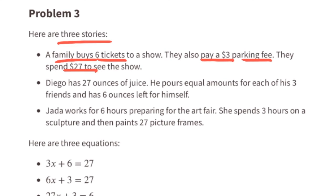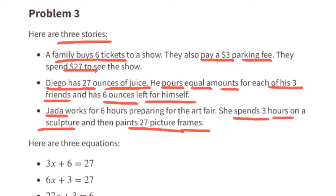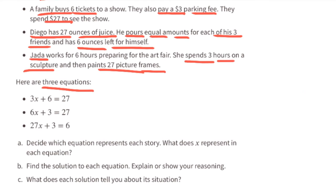Problem number 3: here are three stories. A family buys six tickets to a show, pays a three-dollar parking fee, and spends twenty-seven dollars. Diego has 27 ounces of juice, pours equal amounts for each of his three friends, and has six ounces left over for himself. Jada works six hours preparing for the art fair, spends three hours on a sculpture, and then paints 27 picture frames.